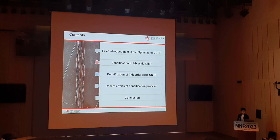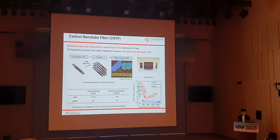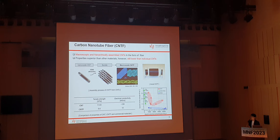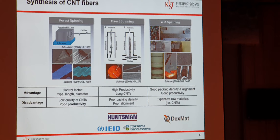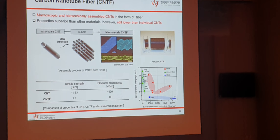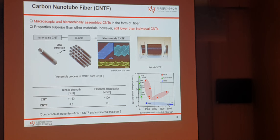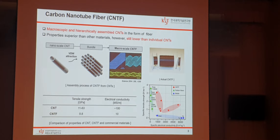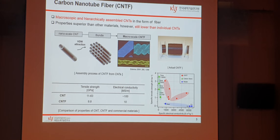CNT fiber is a macroscopic and hierarchically assembled structure of CNTs in the form of fiber. It is considered a practical macroscopic structure for harnessing the outstanding properties of CNTs while allowing for direct handling. CNT fiber has demonstrated the ability to possess electrical and mechanical properties at the same time, which is the most appealing advantage compared to other materials. However, properties of CNT fiber are still lower than individual CNTs, primarily due to imperfect assembly of CNTs and bundles during fiber formation.